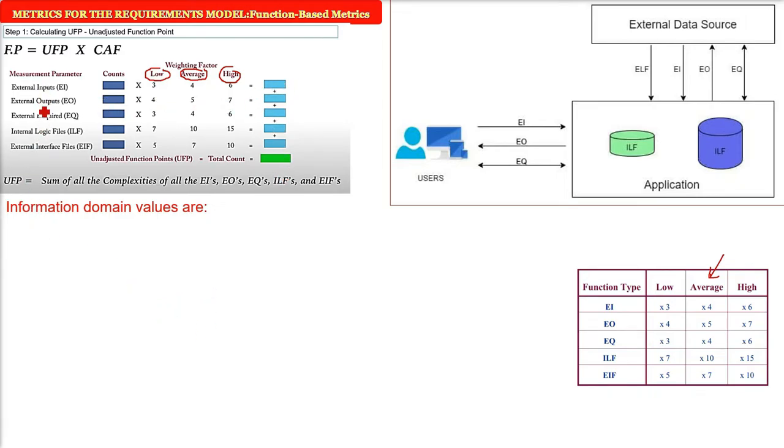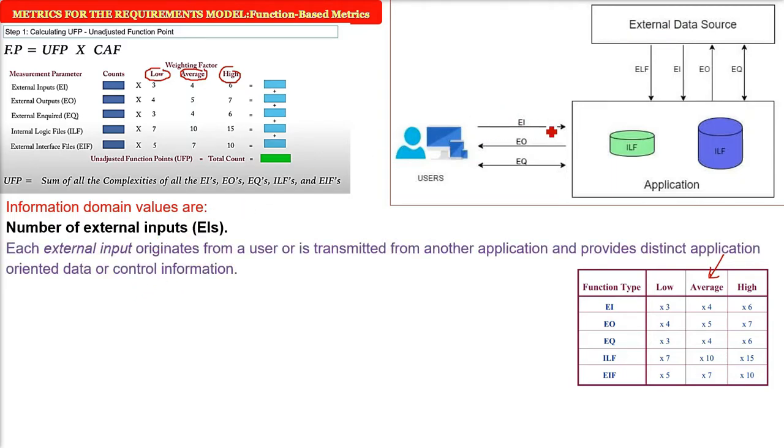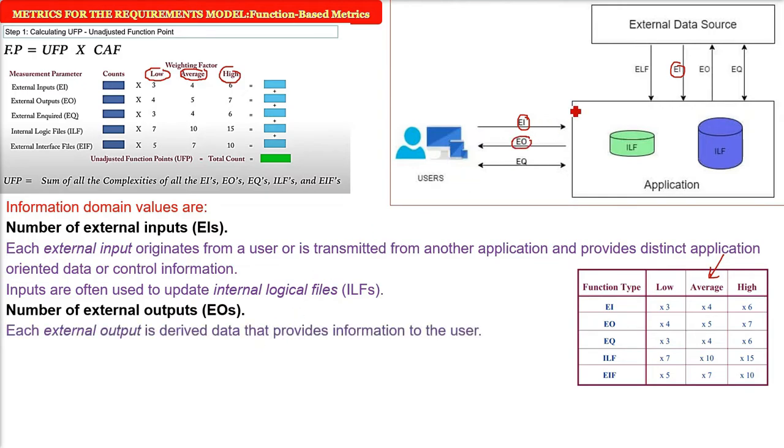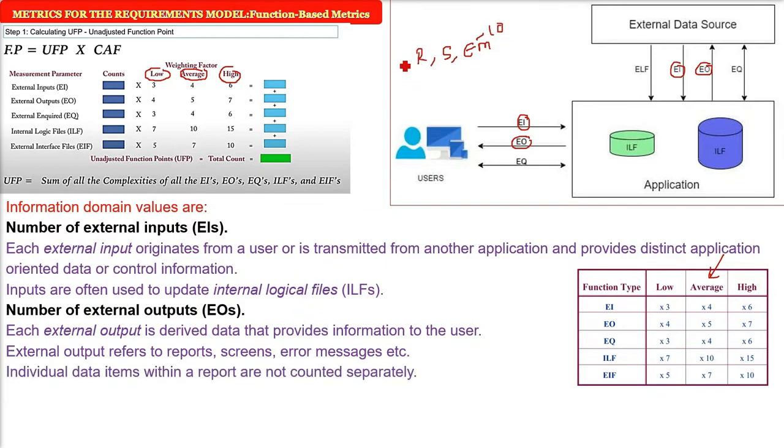So what are these information domain values measurement parameters? First is the application and user is interacting with the application and there can be some external data source. The number of external inputs, each external input originates from the user or is transmitted from another application. Inputs are often used to update the ILF, internal logical files. Now coming to EO, this is another parameter. Each external output is derived data that provides information to the user. So what can it be? It can be a report, it can be a screen, it can be error messages.